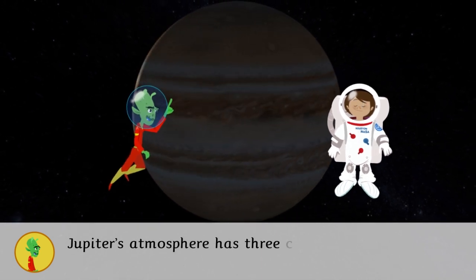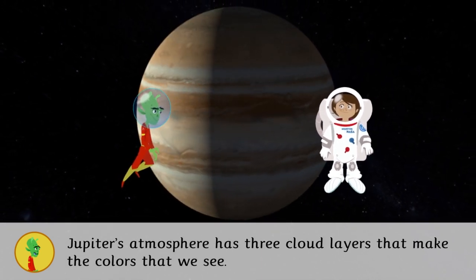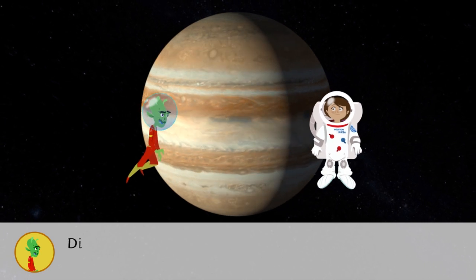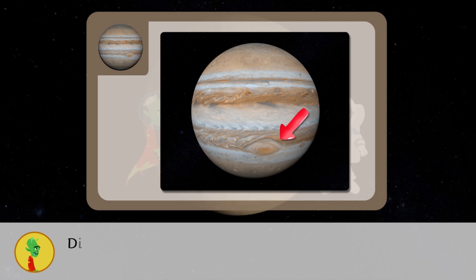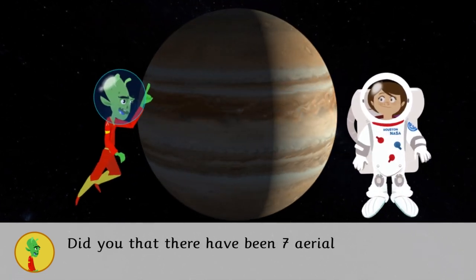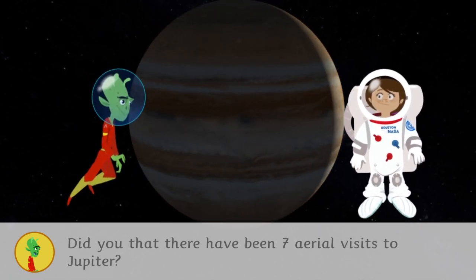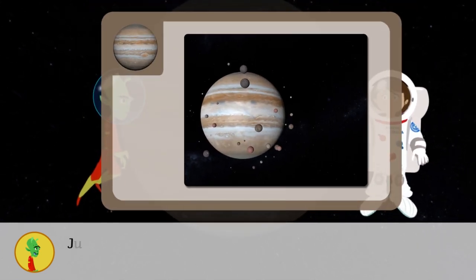Jupiter's atmosphere has three cloud layers that make the colors that we see. Did you see the big red spot? It is a huge storm. Did you know there have been seven aerial visits to Jupiter?